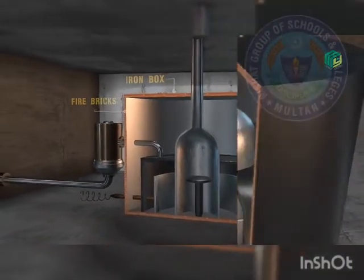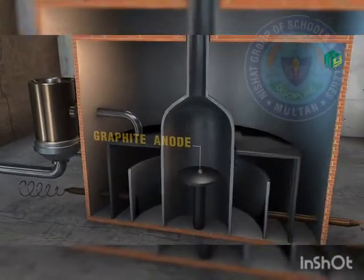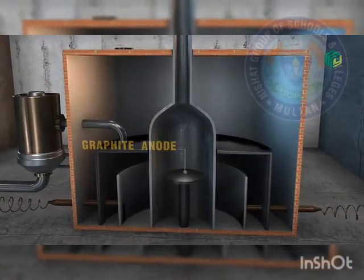In the center of this circular furnace there is a large block of graphite which acts as anode. Graphite acts as anode.